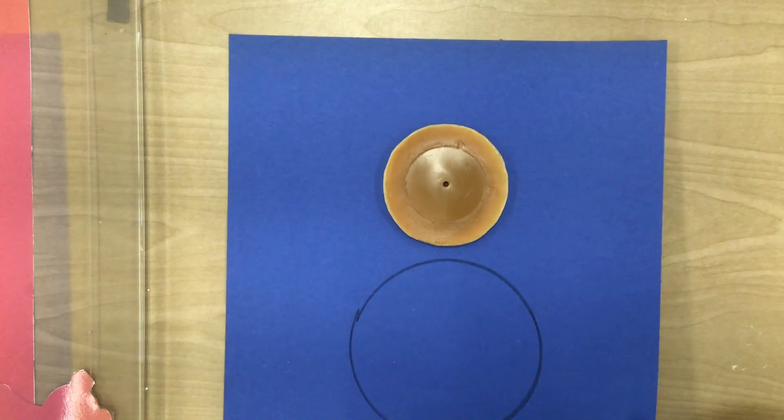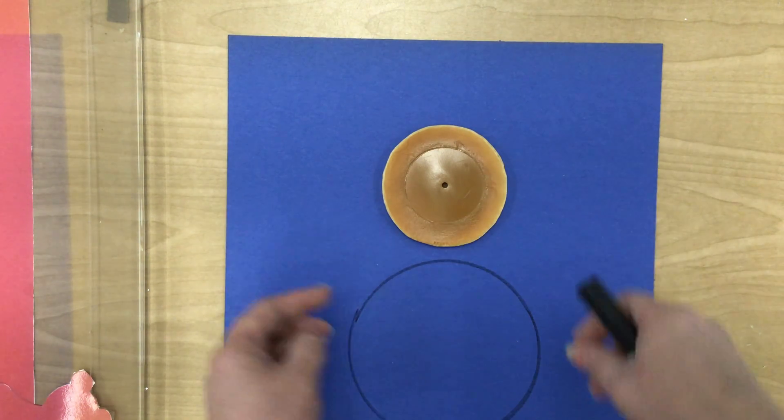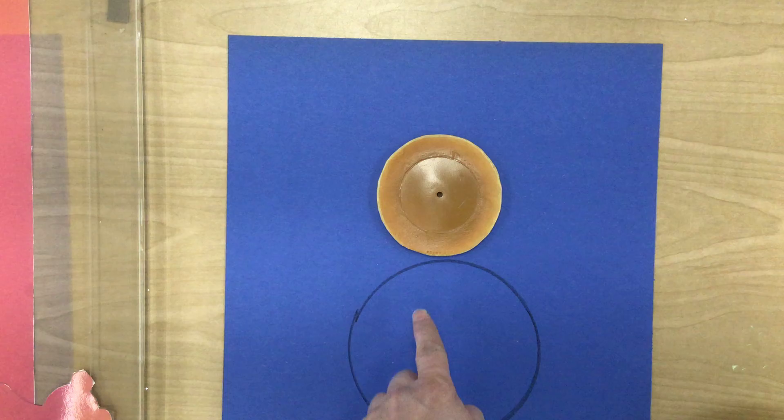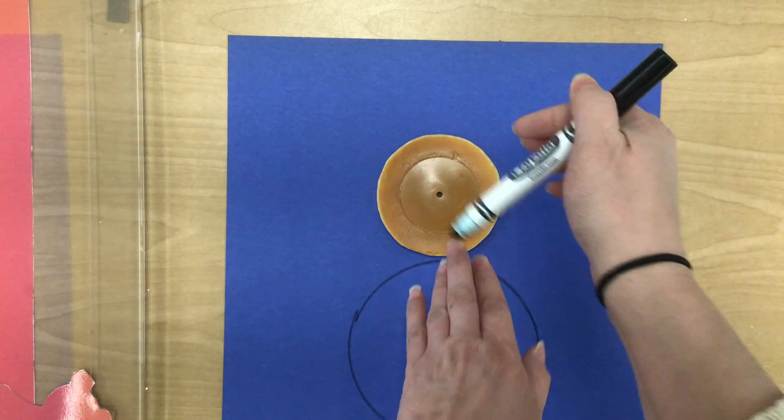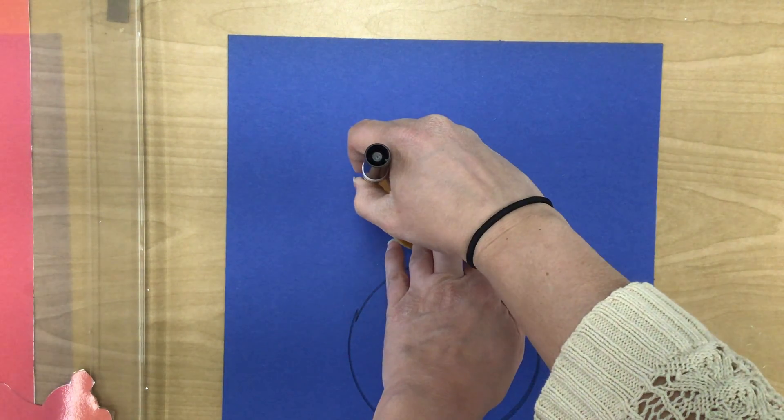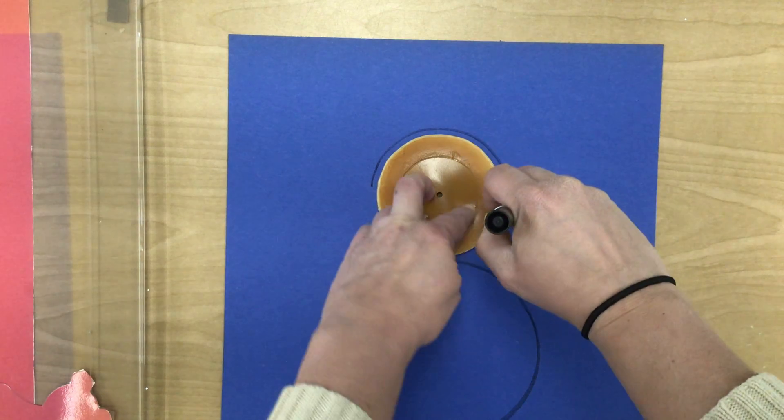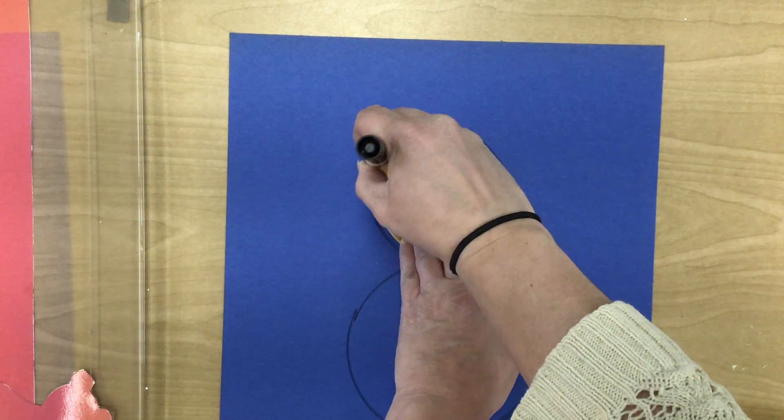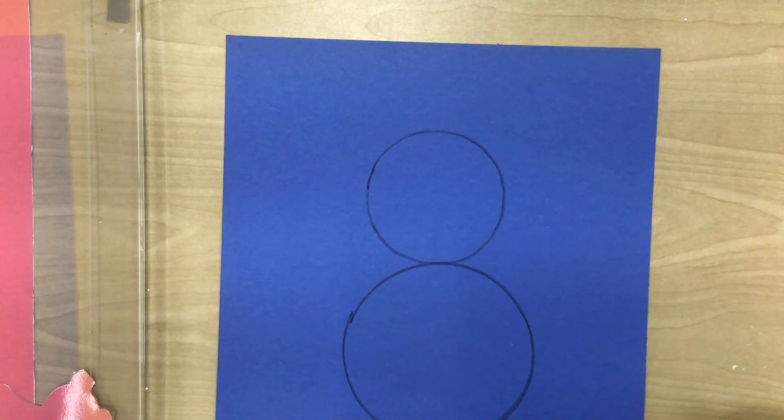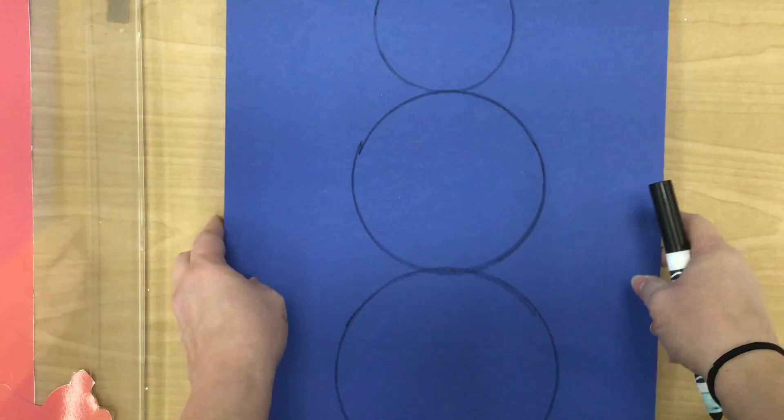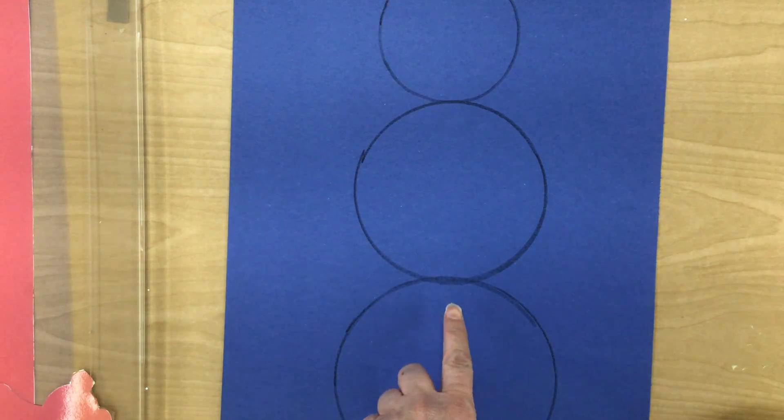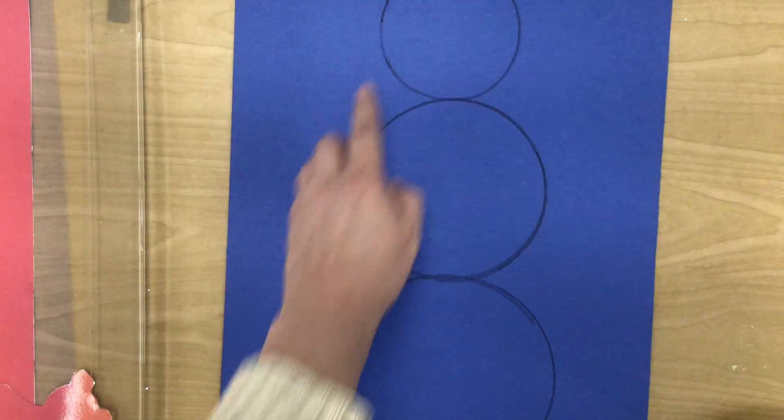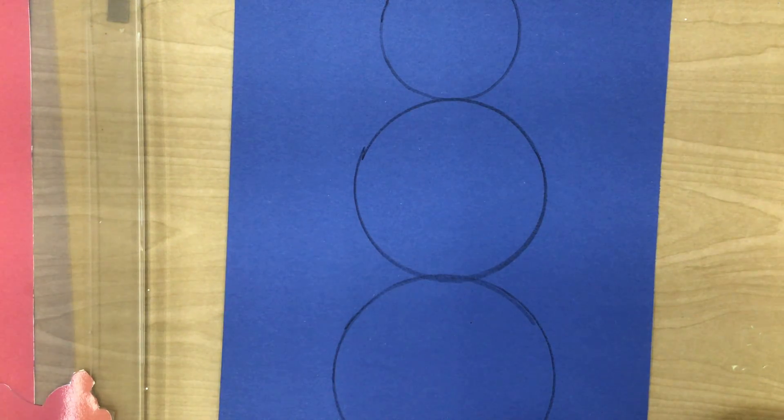Now the same thing with this small circle. I'm going to bring it down so it touches the medium one. And then I'm going to go around my small circle. So there we go. Now we have a large, a medium, and small circle. And it's the shape of a snowman.